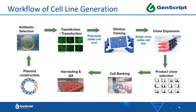Let me introduce the workflow of how we generate stable cell lines at GenScript. We start by constructing a plasmid including both the target gene and the selective gene. The plasmid is then selected by antibiotic selection, and only the target expression plasmid is used for transfection. A cell pool is generated with heterogeneous expression of the target gene. We then perform dilution cloning to obtain single-clone stable cell lines. Each clone is expanded in cell culture and the one with the best performance is selected as our product. The product clone is banked, further expanded, and a portion is used for QA before becoming a deliverable.